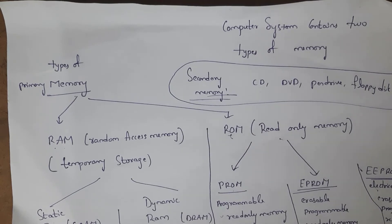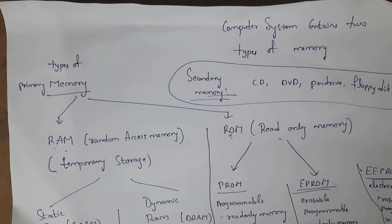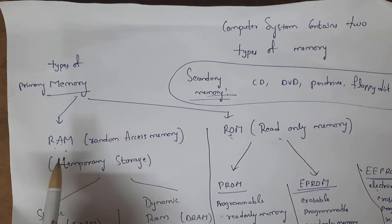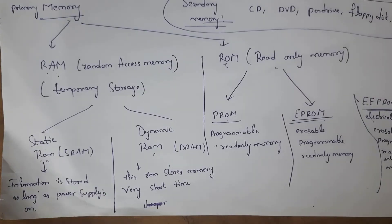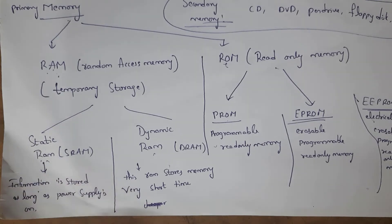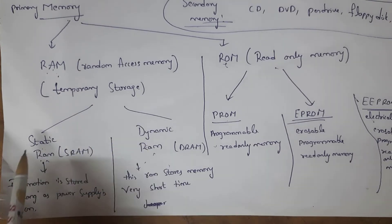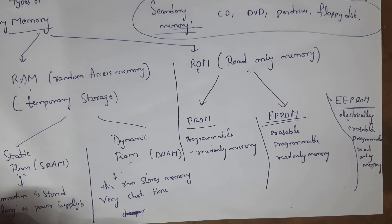Memory is very important for every system — without memory, we cannot perform even a single task. A computer system contains two types of memory: primary memory and secondary memory. Primary memory has two types: RAM (Random Access Memory) and ROM (Read-Only Memory). RAM is temporary storage — all data present in RAM is lost when we shut down the system. There are two types of RAM: static RAM (SRAM), where data remains until shutdown, and dynamic RAM (DRAM), where data is lost very quickly even without shutting down. Static RAM is more costly and consumes more power than dynamic RAM.